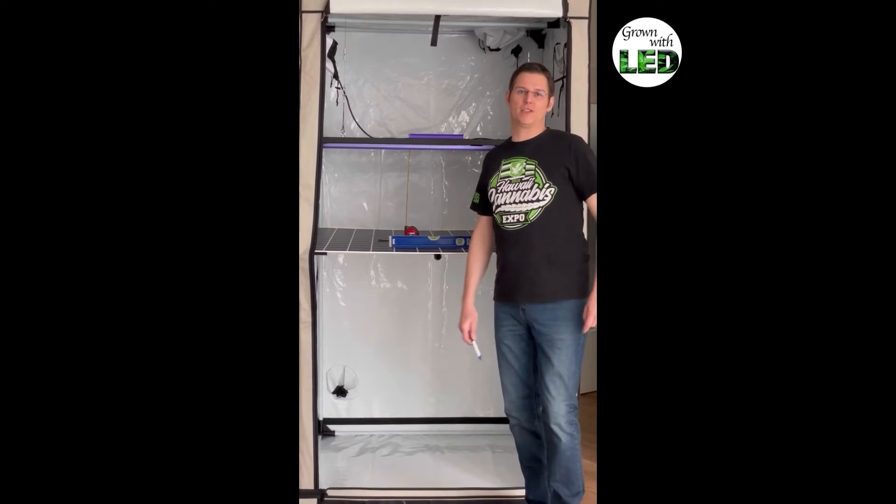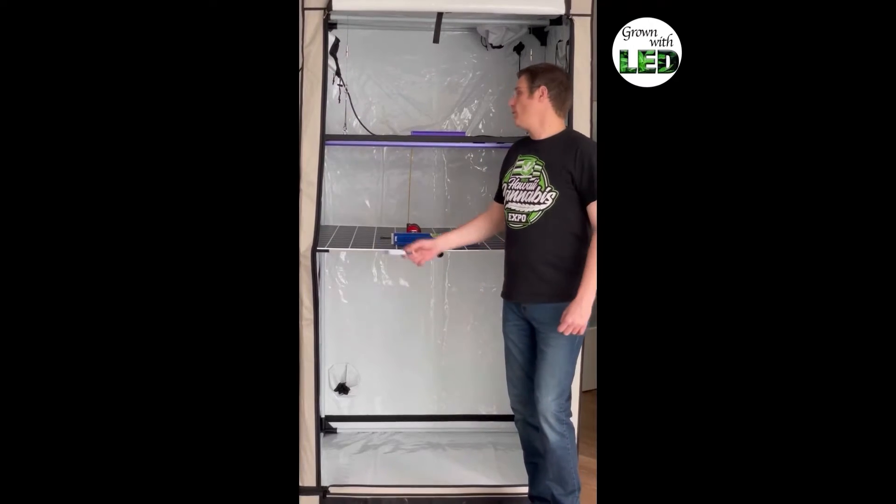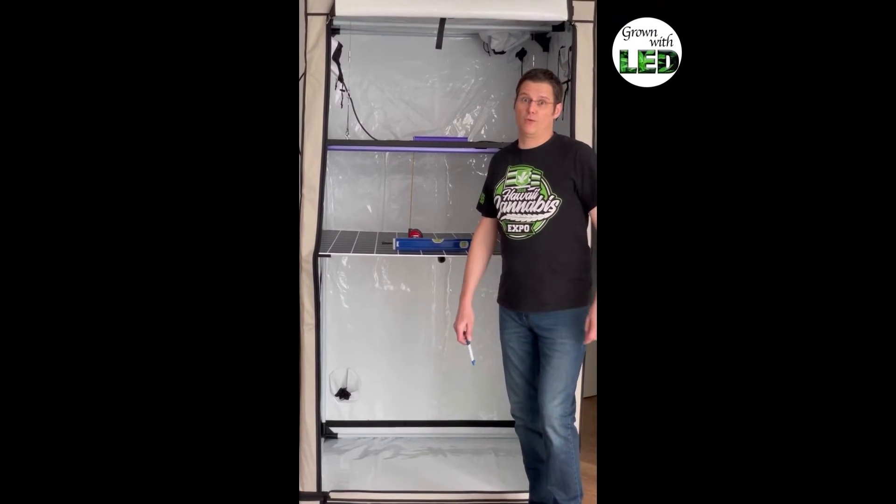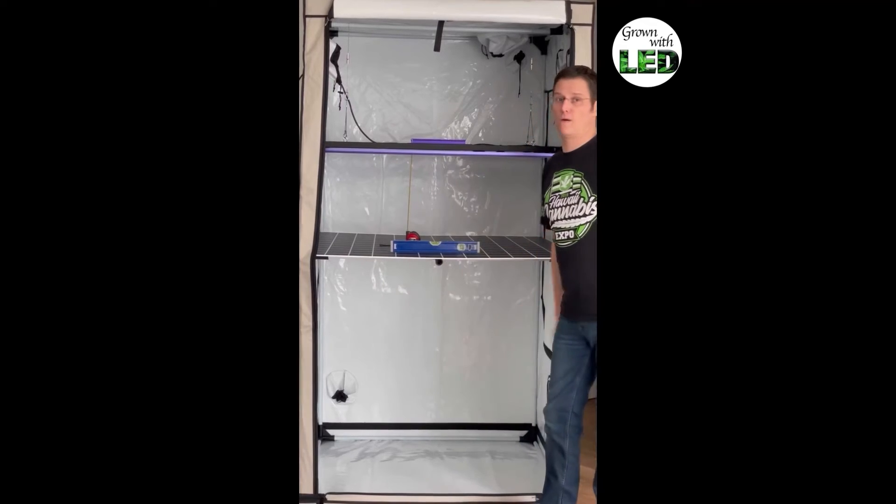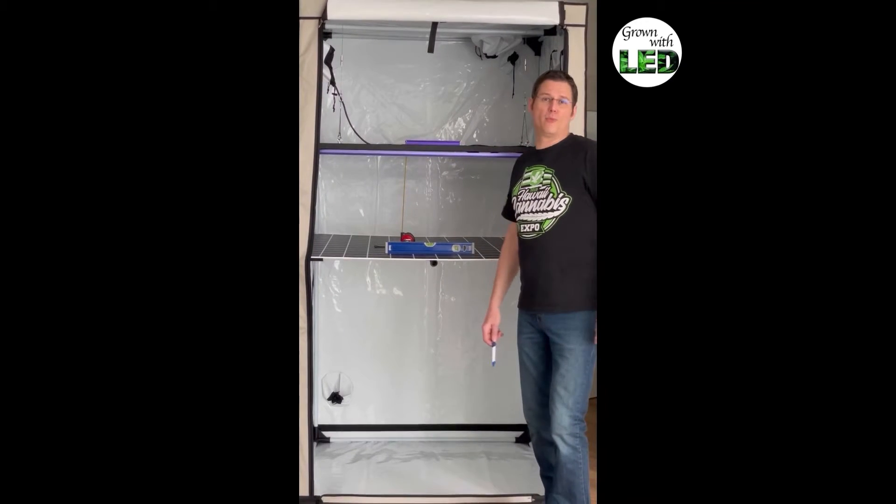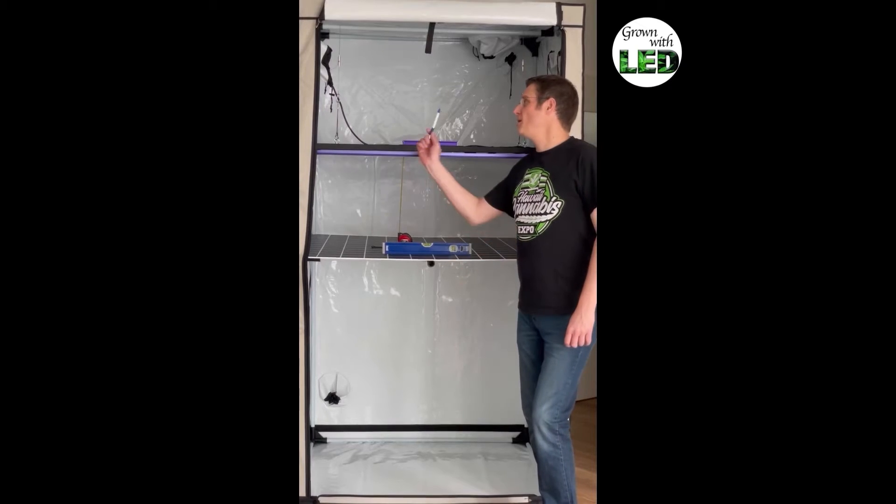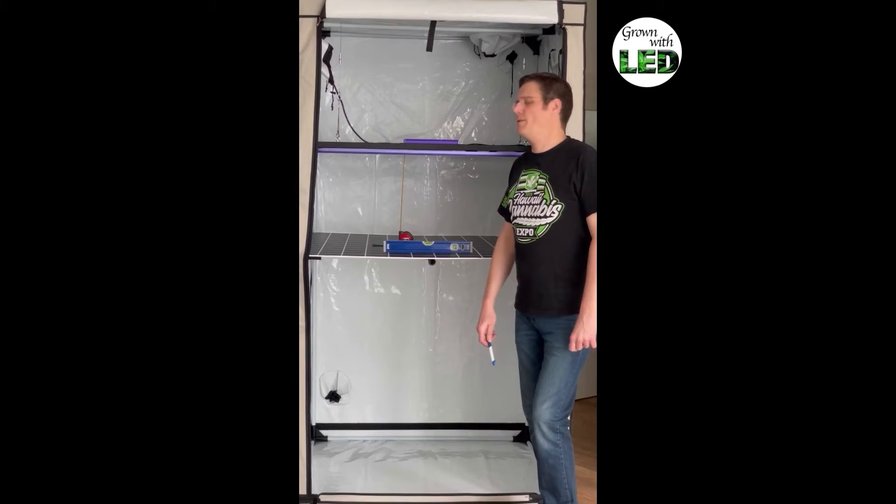Today we have the SUSE 600W Pro, which we measured in our last episode in the 150 tent, hung up in our 120 tent. This is the Homebox Ambient Q120+, my standard grow tent, which I do all my measurements in.